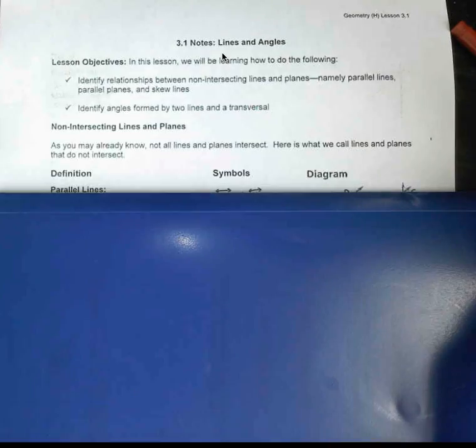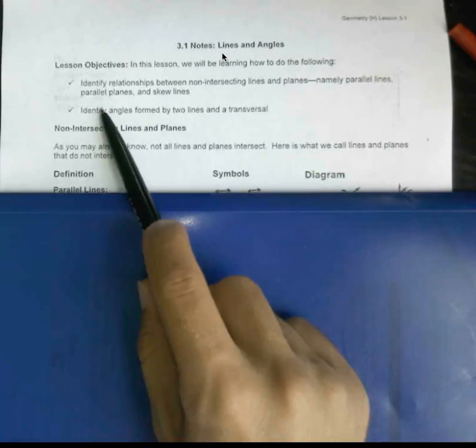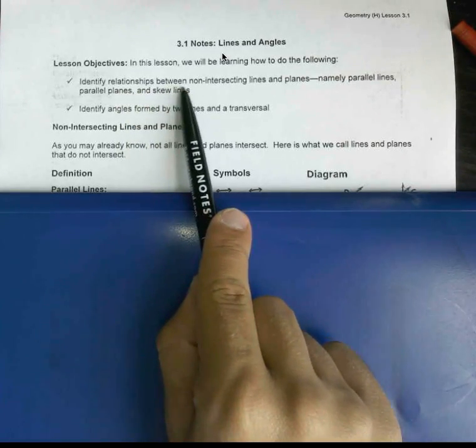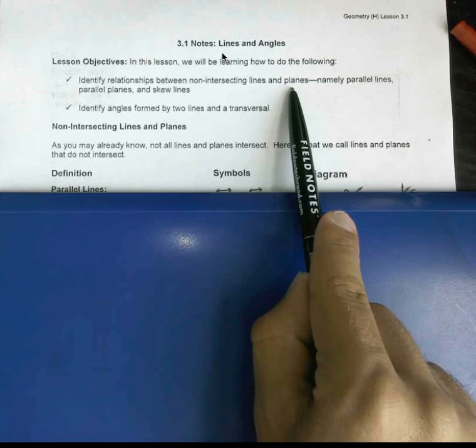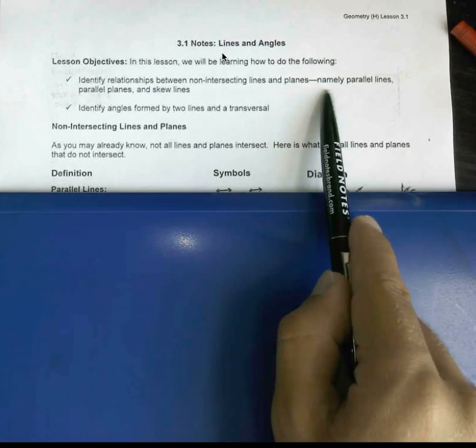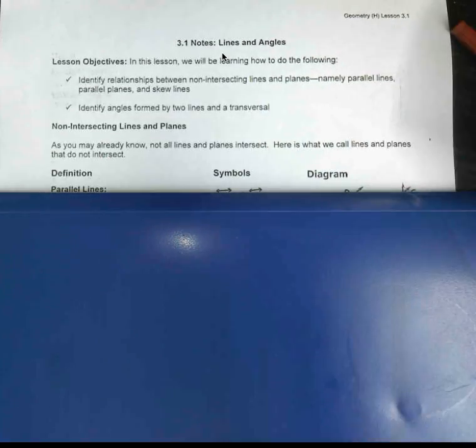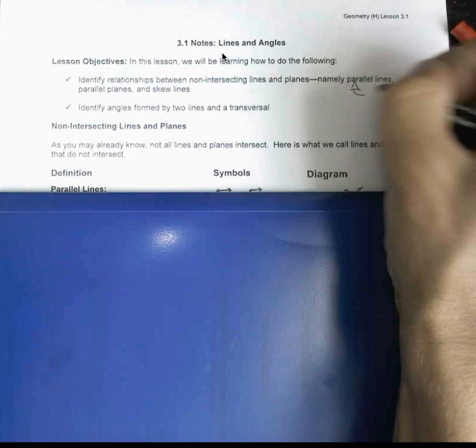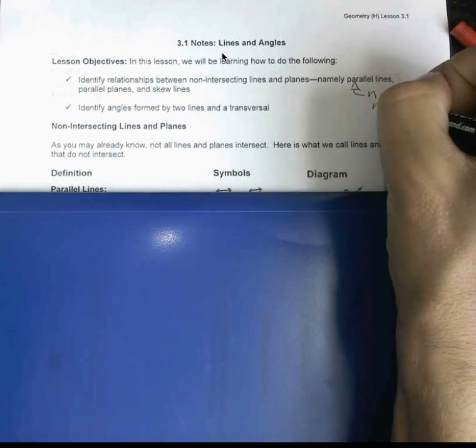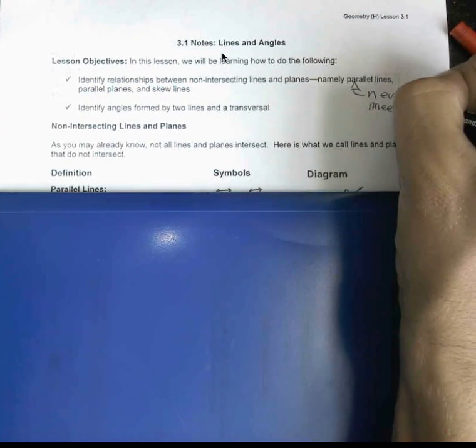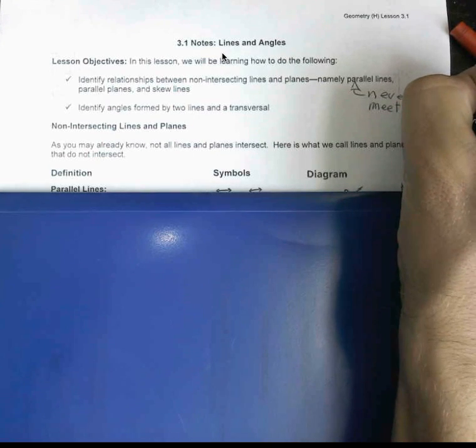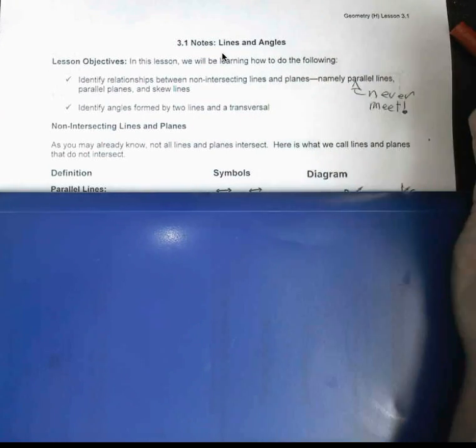This lesson will be identifying relationships between non-intersecting lines and planes, specifically parallel lines. These don't meet, these never meet—it's really a shame. You can think of this like railroad tracks. You'll never find the intersection of Broad Street and 22nd Street.